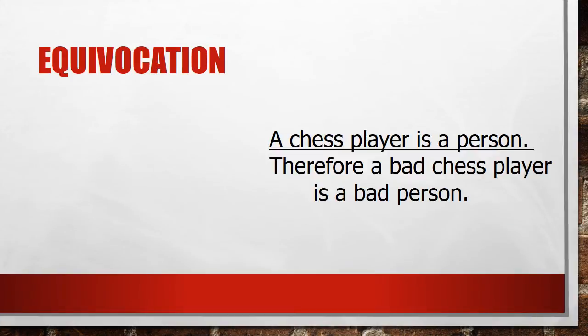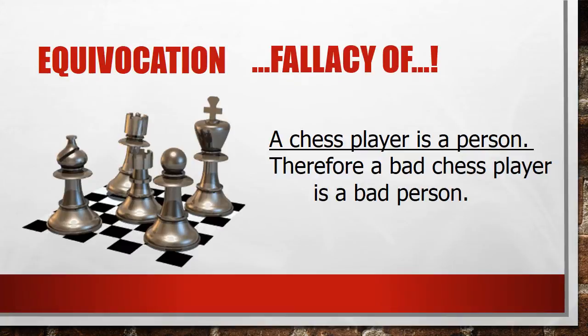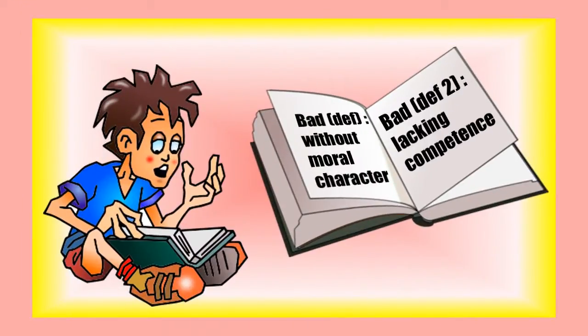But there are such things as fallacies of equivocation, and that happens when the equivocation occurs within the context of an argument. Like we said previously, a chess player is a person, and a bad chess player is a bad person. We noted that bad can mean without moral character, or it can mean lacking competence in a certain field like chess. So in this case, we have an argument that turns on an equivocation — and that is a fallacy of equivocation.